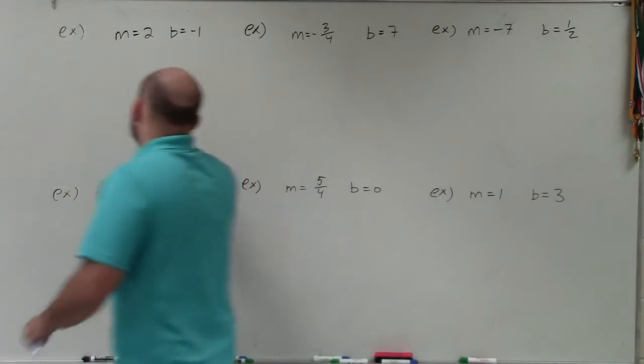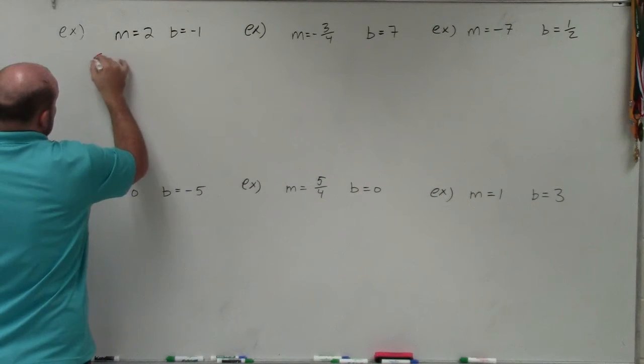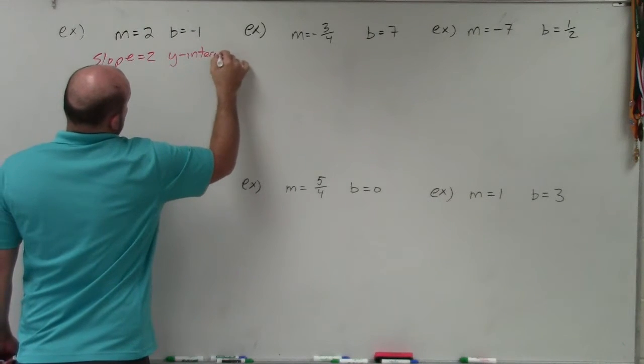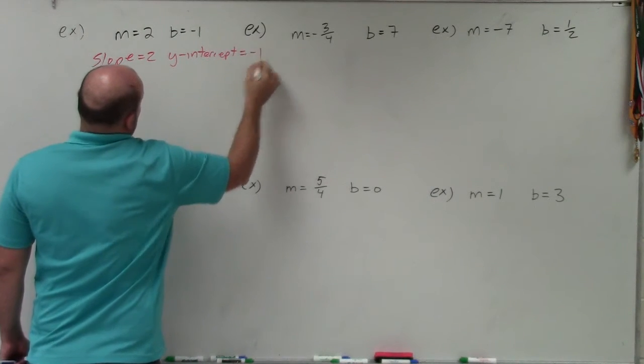Now, you might have some problems that would be very similar to this, but instead of writing m and b, they might say your slope is equal to 2 and your y-intercept is equal to negative 1.